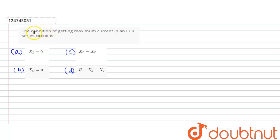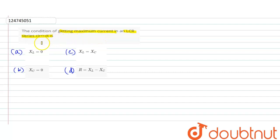This is the condition of getting maximum current. This is an LCR circuit. The LCR circuit will have maximum current. The condition for getting the answer is: XL is equal to 0, XL is equal to XC, and R is equal to XC. So let's start the question.